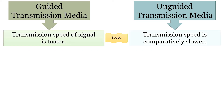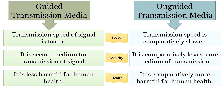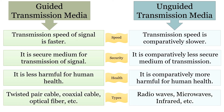Data transmission is faster in guided media, whereas in unguided media it is comparatively slower. Guided transmission media is secure, whereas unguided transmission media is comparatively less secure. The guided media is less harmful for human health, whereas the unguided media is more harmful. The categories of guided media are twisted pair cable, coaxial cable, and optical fiber, while the categories of unguided media are radio waves, microwaves, and infrared signals.